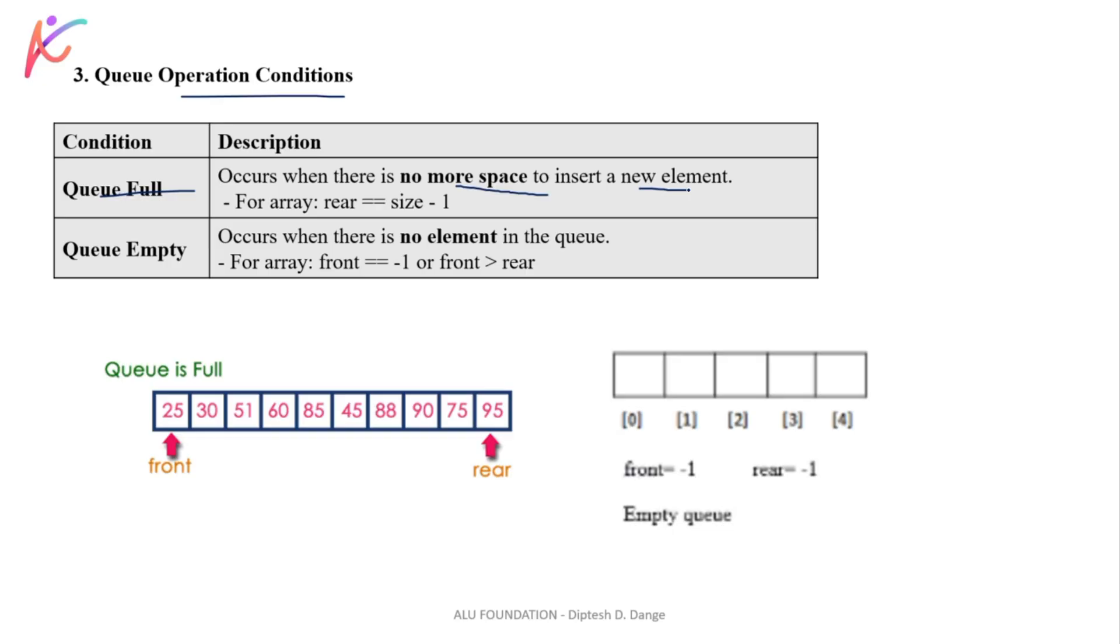Queue Full means what? Queue occurs when there is no more space to insert a new element. Queue Full, so how can I find it? Tell it for the array. Queue Full condition is: rear equals size minus 1. Means that your Queue size is 5 and your rear pointer is pointing to 5 minus 1.